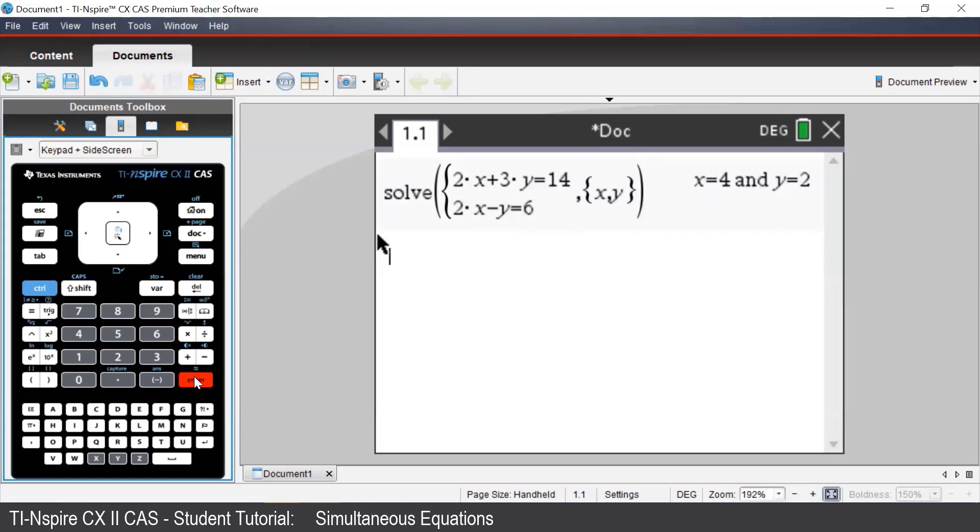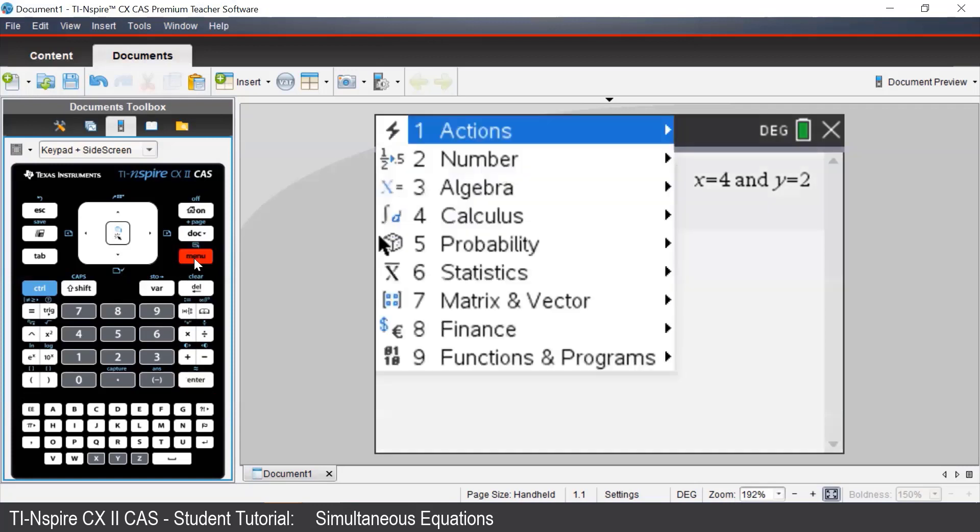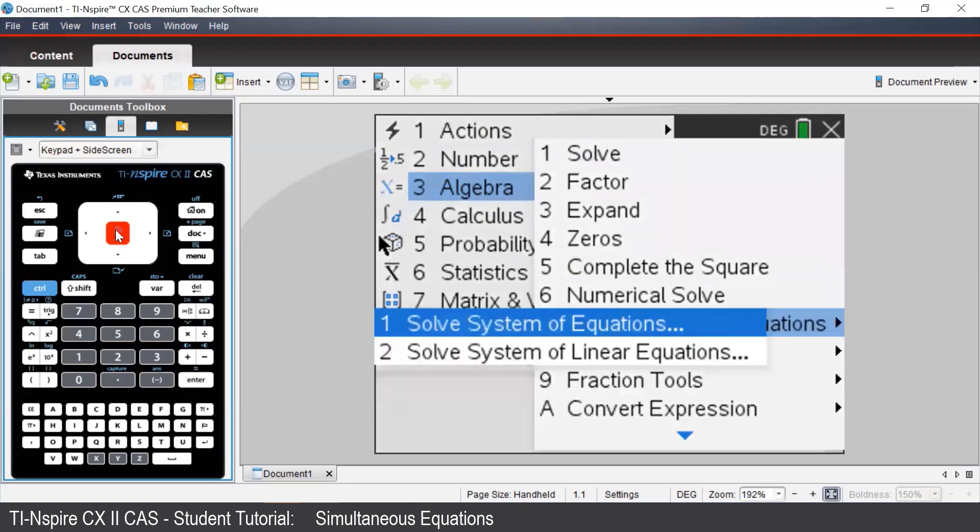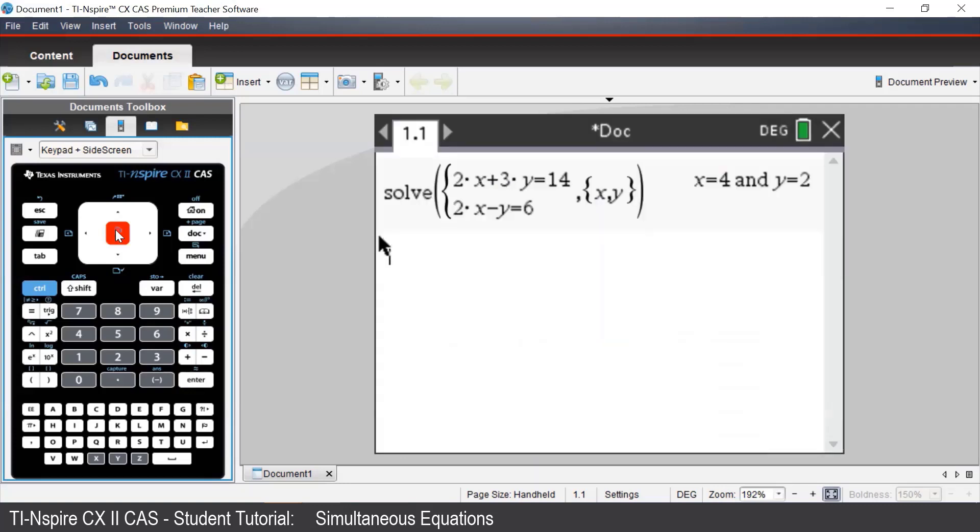Suppose we wish to solve for three variables. Again, we can press Menu, and go to Algebra, and select Solve System of Equations. And again, the first option.